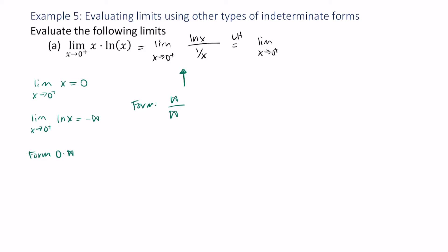The derivative of the natural log of x is 1 over x, and the derivative of 1 over x is negative 1 over x squared. So now I can just rewrite this algebraically.